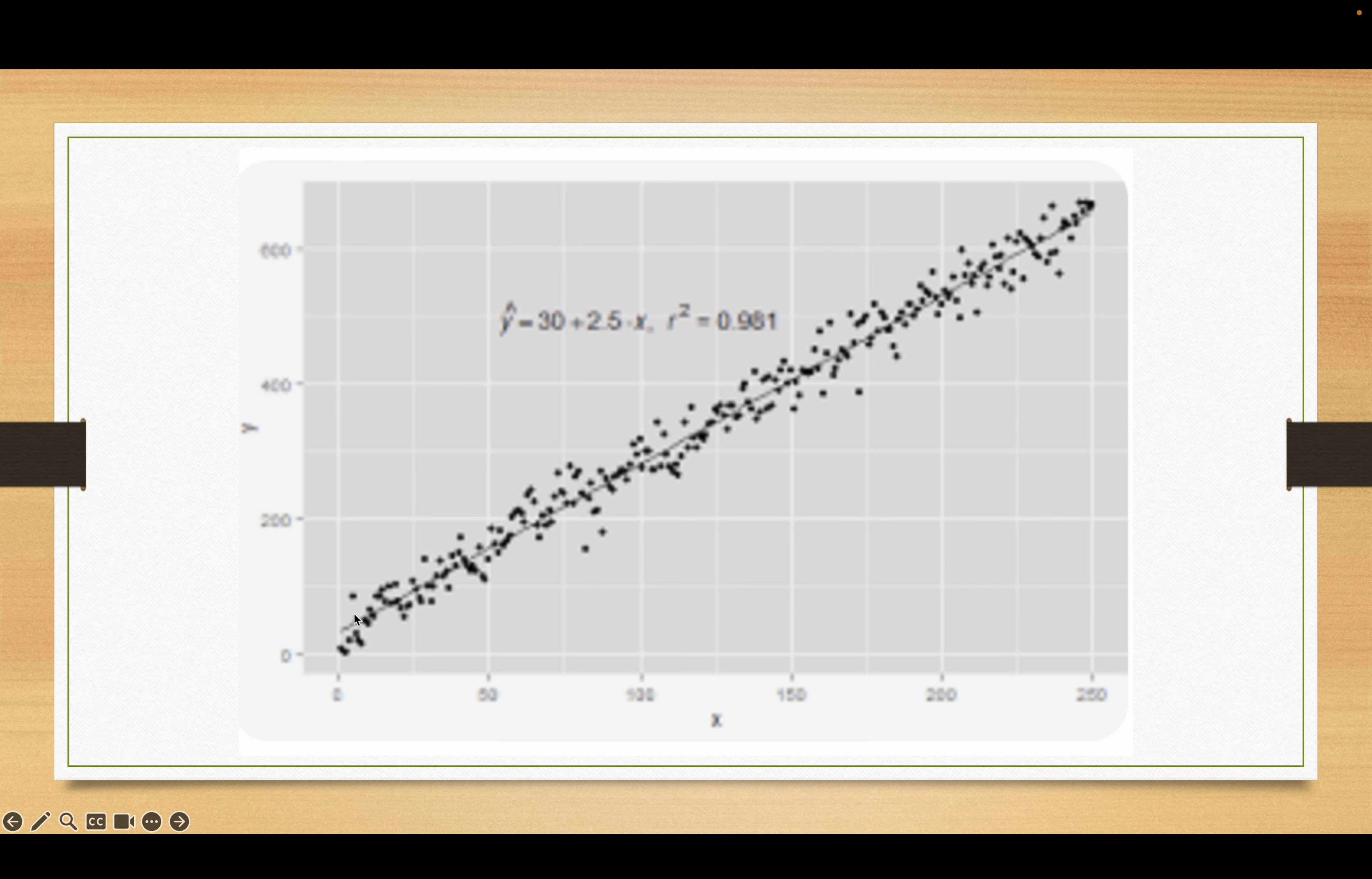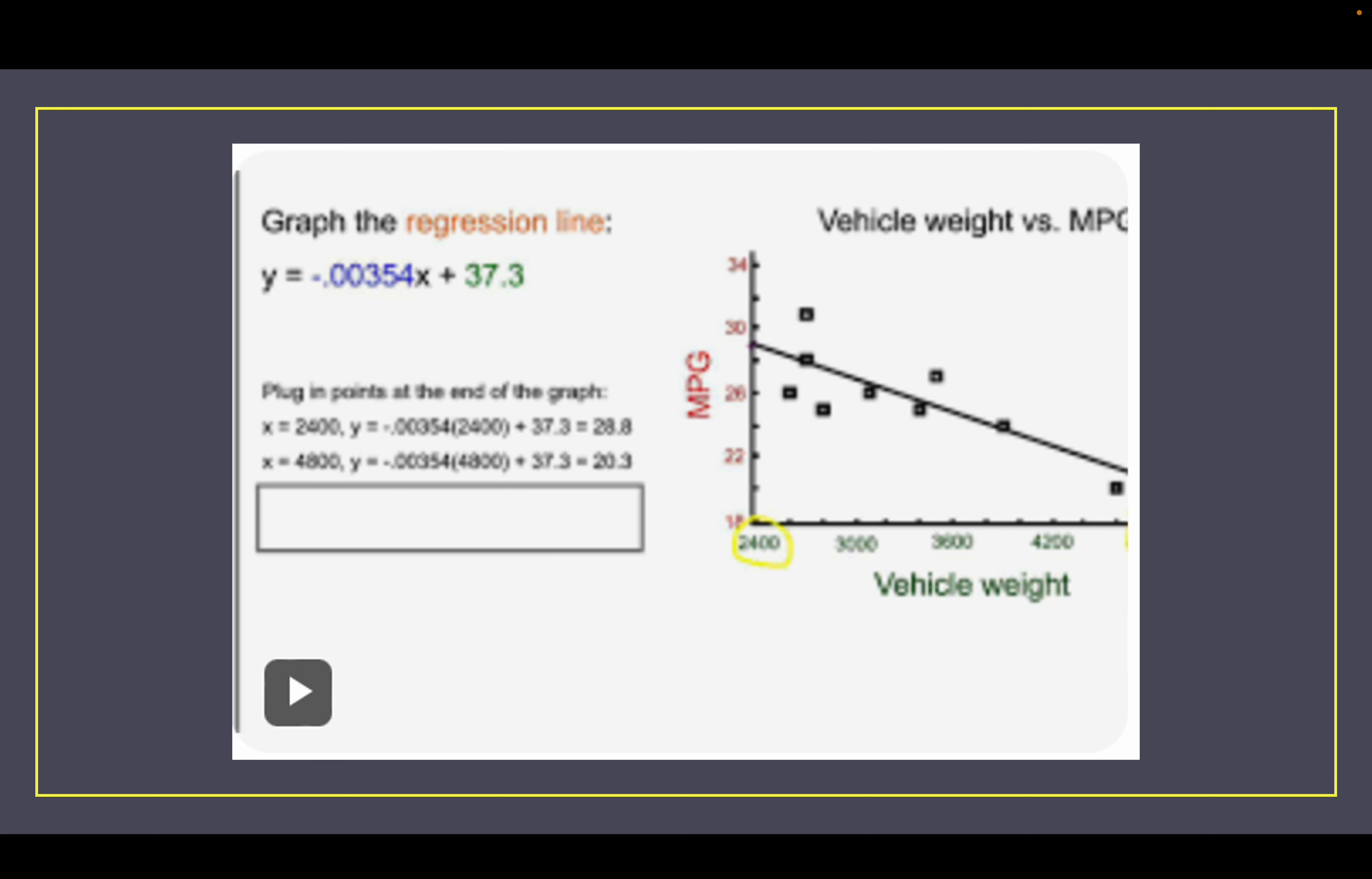Here's another one that puts in a calculator. This gives us two different things when we do this in the calculator. First it takes all the scatter plots and gives us the equation which is y equals 30 plus 2.5x, but it also gives us the correlation coefficient squared. In your calculator the correlation coefficient would be just r.